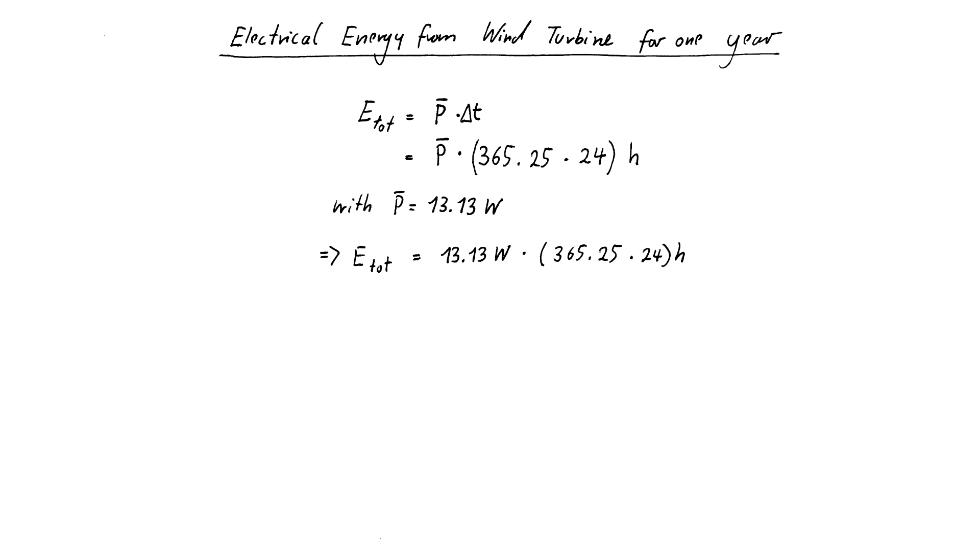With that we get E total equals 13.13 times 365.25 times 24 hours. Now, because I want to use Napier's bones to do this calculation, I will now use powers of 10 to get rid of the decimal points. E total equals then 13.13 times 10 to the power of minus 2 watts times 36.525 times 10 to the power of minus 2 times 24 hours.